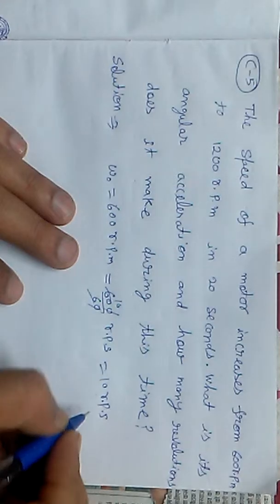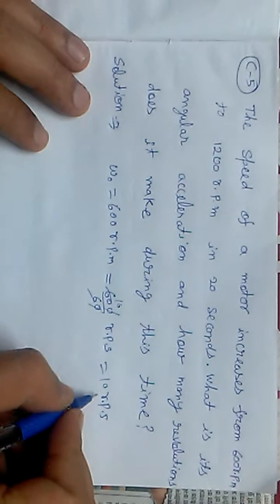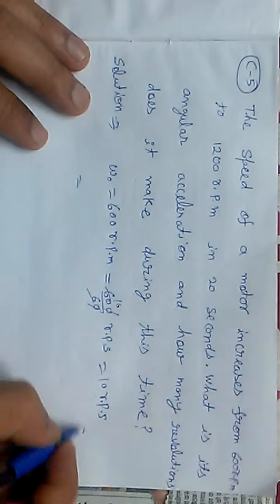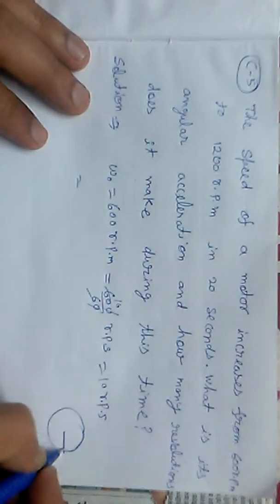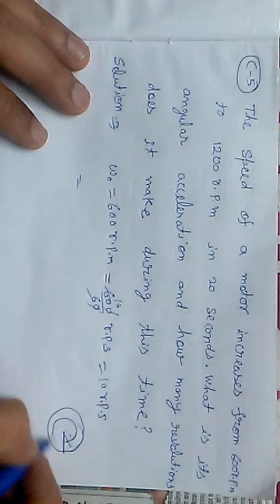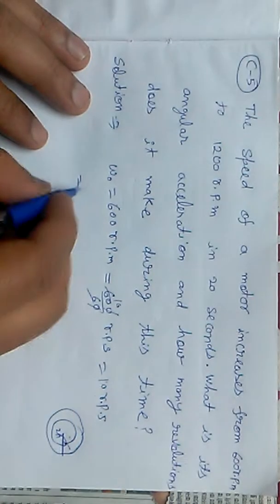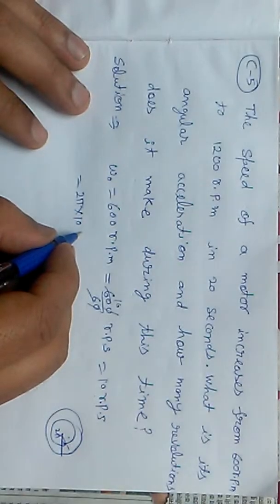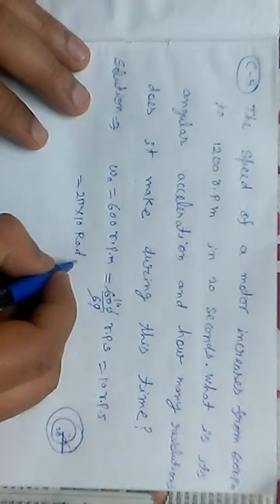Now we have revolution per second. In one revolution, the angle is 2 pi. So if this is one revolution, then it's 2 pi. For 10 revolutions, we multiply by 2 pi.